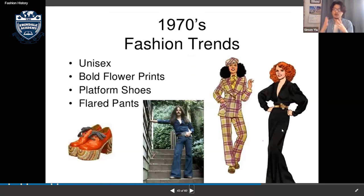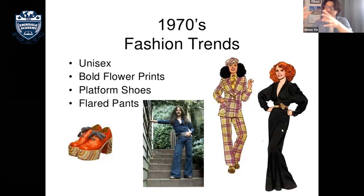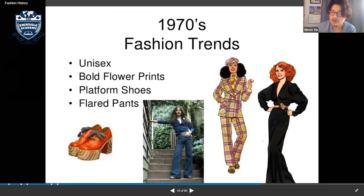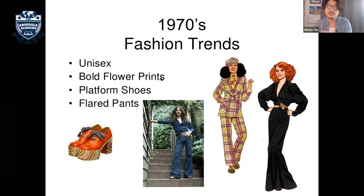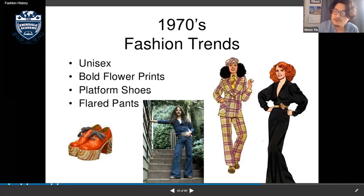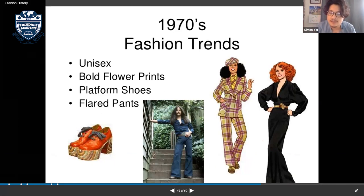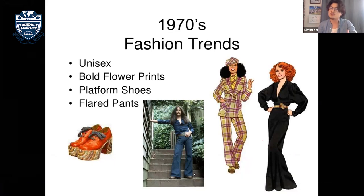In the 1970s, clothing became more unisex — men dressed in more feminine styles with long hair, tight clothing, flare pants, and flower patterns. The civil rights and Black cultural movement from the 1960s brought more patterns and flower prints into mainstream fashion.